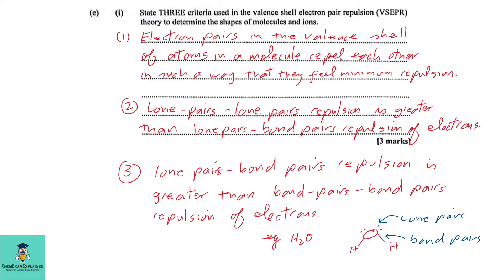As an example, in water — one oxygen bonded to two hydrogen atoms — oxygen must obey the octet rule, giving eight electrons on the valence shell with two lone pairs and two bonding pairs. Hydrogen only needs two electrons to be stable. This illustrates that lone pair to lone pair repulsion is greater than lone pair to bond pair repulsion.